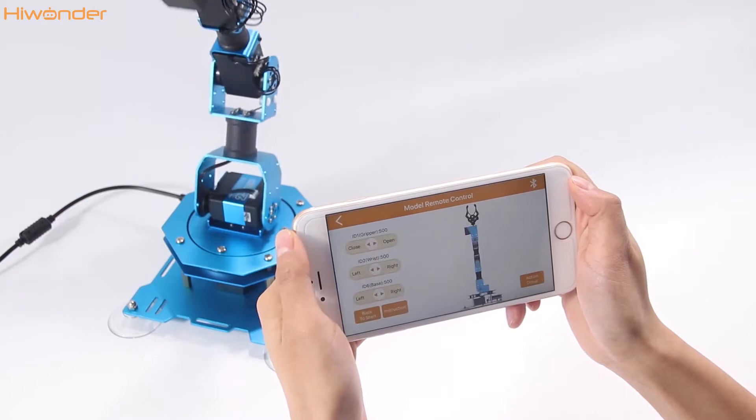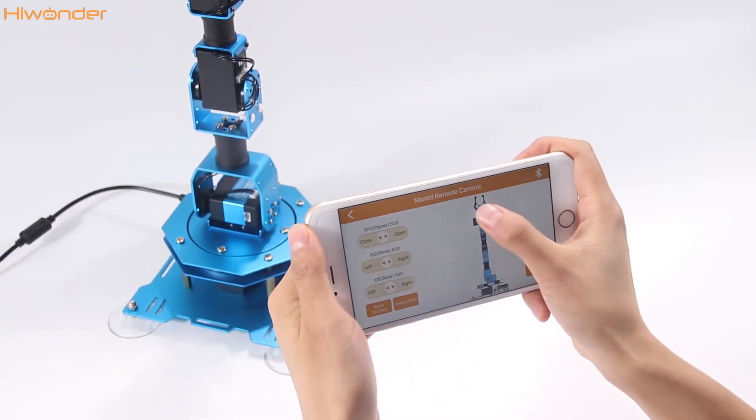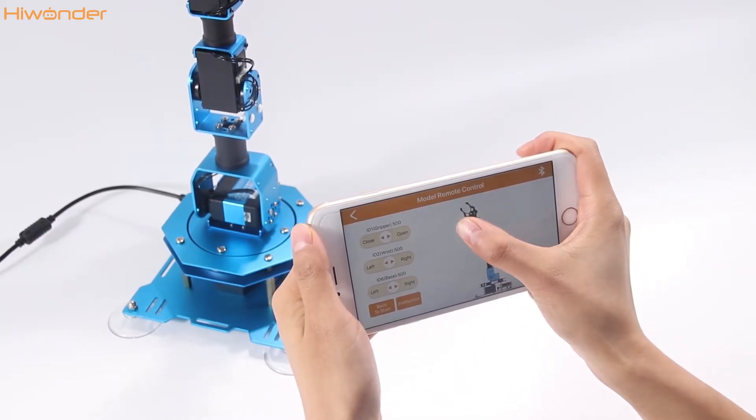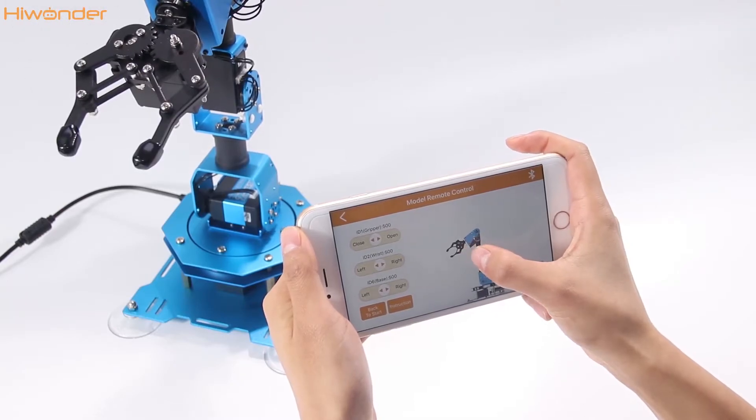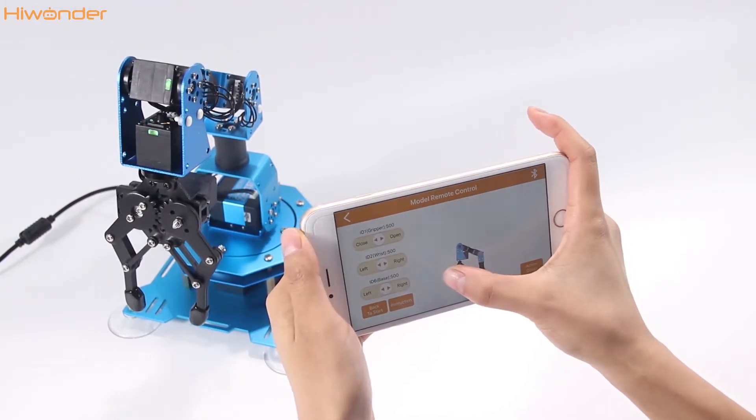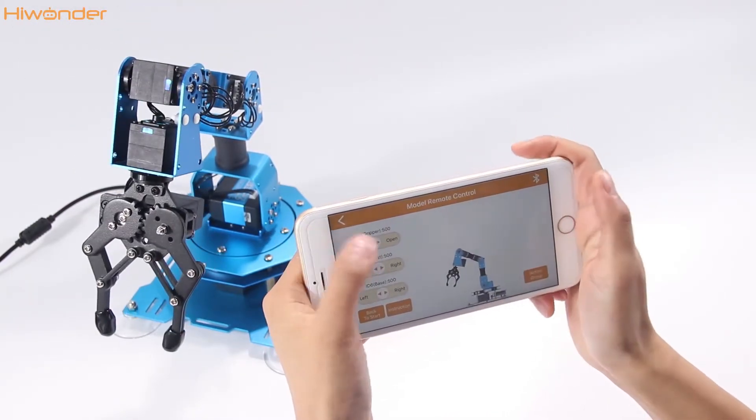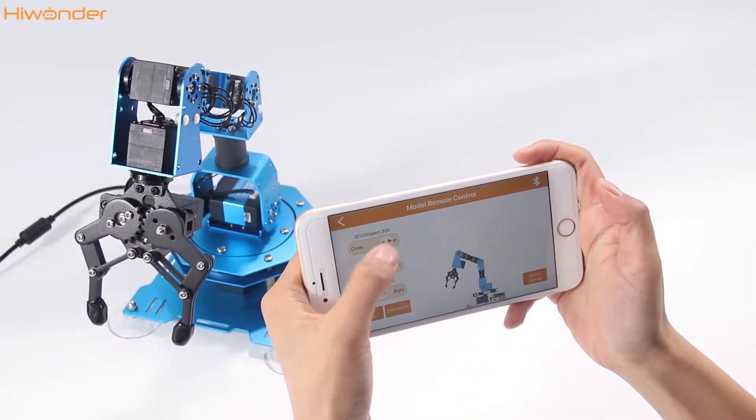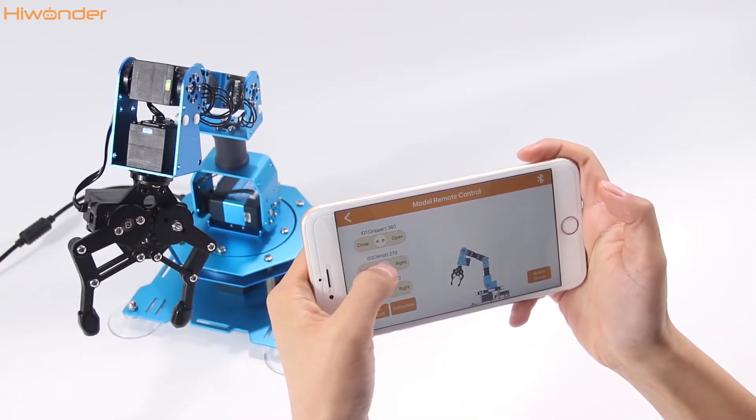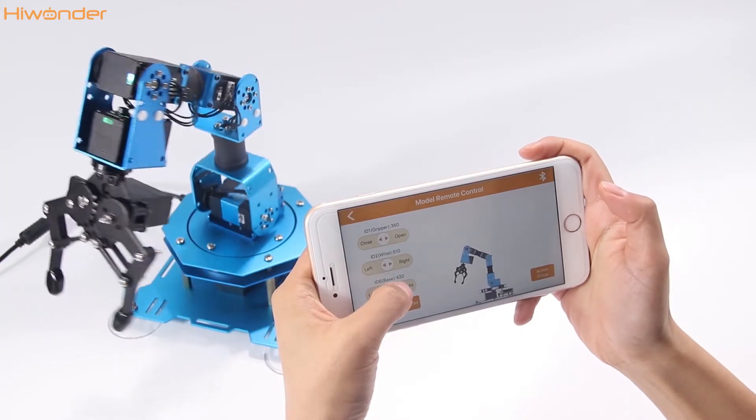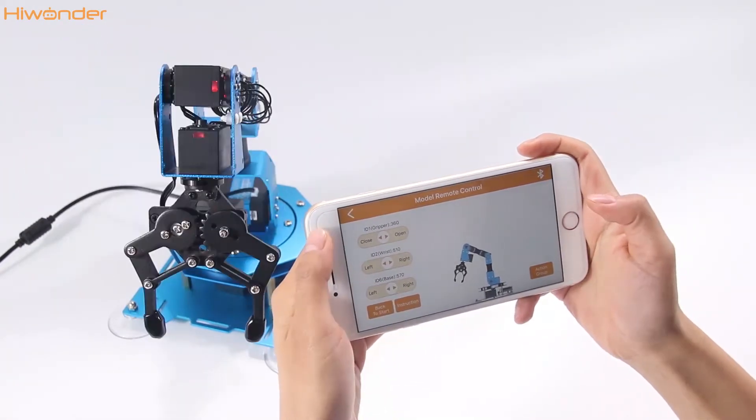Let's come to the first one. This is the X-Arm model. We can drag the model directly to control the X-Arm. Or drag the button here to close and open the gripper or turn left and turn right. Back to start is back to the initial position.